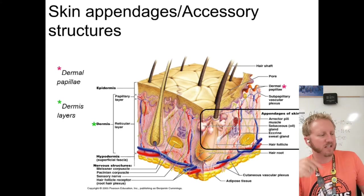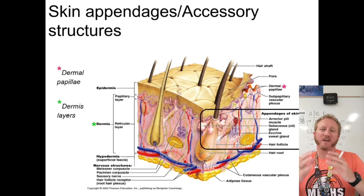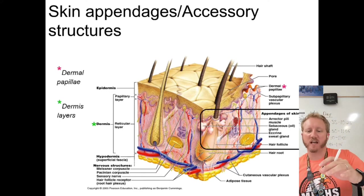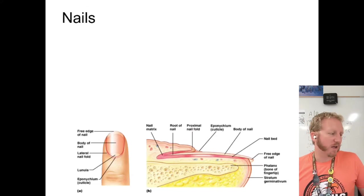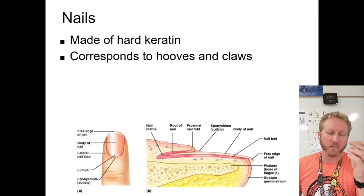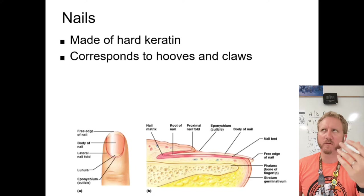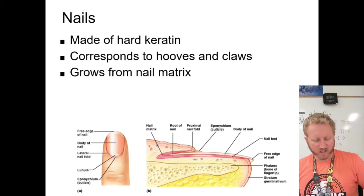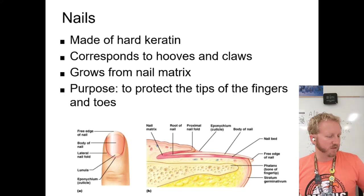The skin appendages are located within the dermis and epidermis, and include hair, hair follicles, and various glands — exocrine glands with ducts that secrete fluids onto the surface of your skin. Nails are another appendage — made of hard keratin, similar to hooves and claws in other animals. They grow from a nail matrix, or nail bed, and their purpose is to protect the tips of fingers and toes.